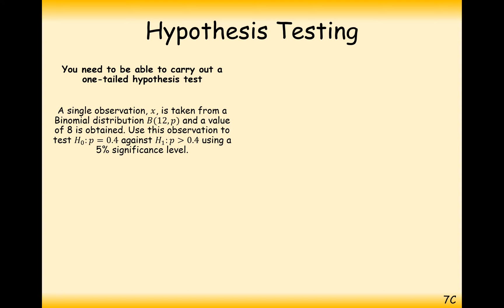Because we think the probability is more than 0.4, we look at the probability of 8 successes or more. When doing a hypothesis test, it's always going to be your test statistic or less, or your test statistic or more — and you work out that probability.